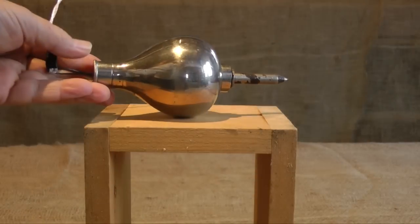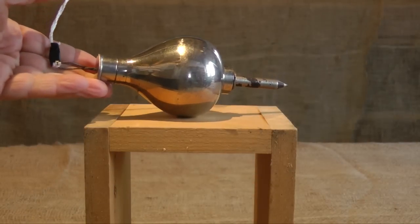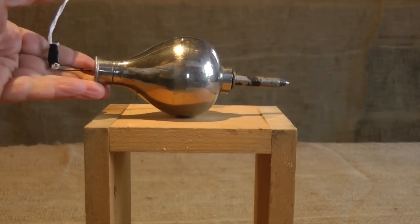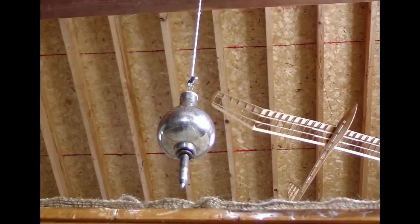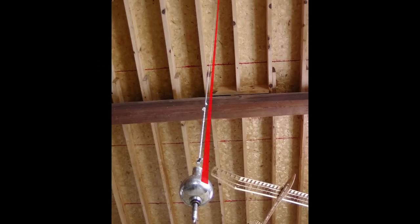The bob is in unusual shape. I estimated the location of its center of mass by balancing it on its side. The distance from the center of mass of the bob to the pivot point at the ceiling is 3.63 meters.